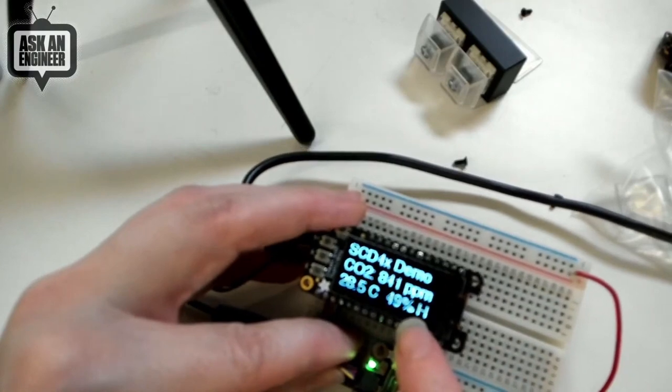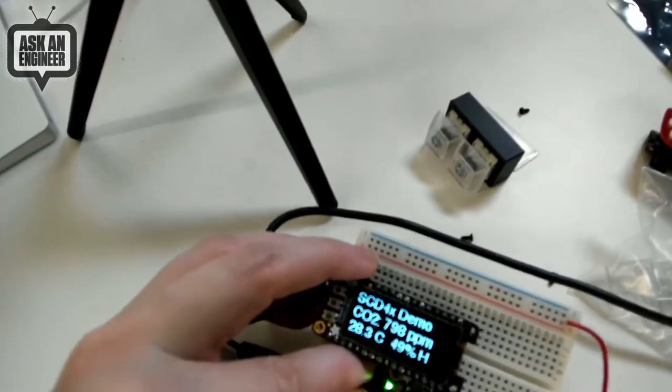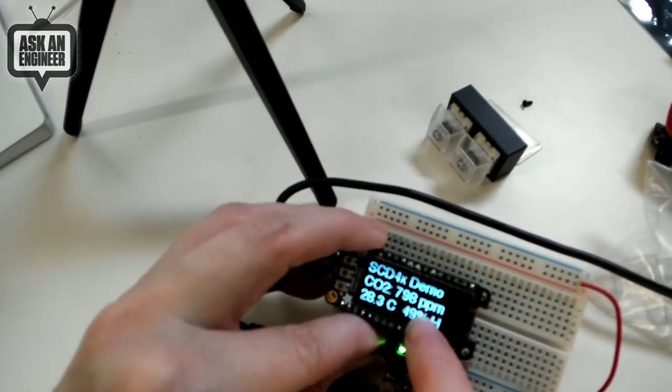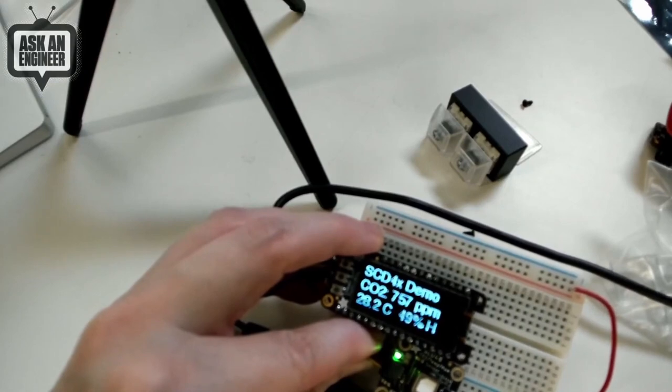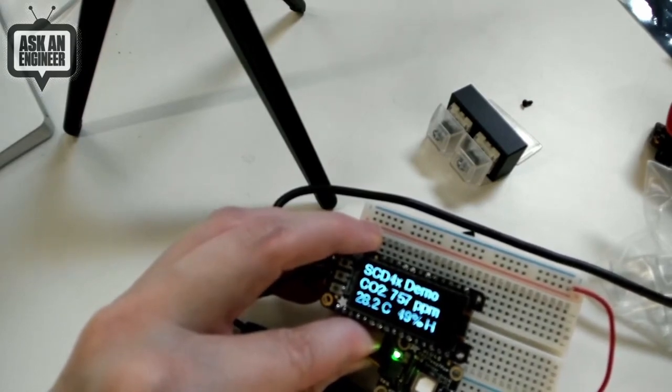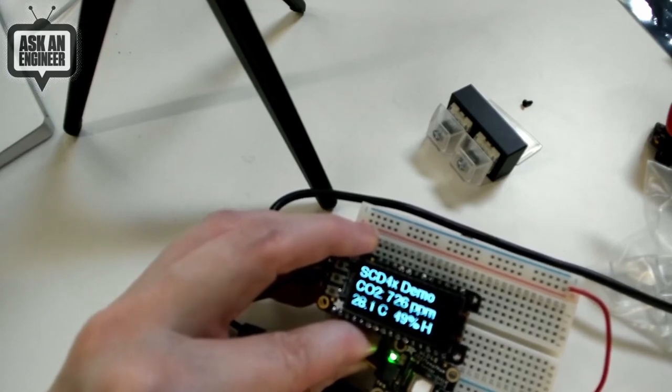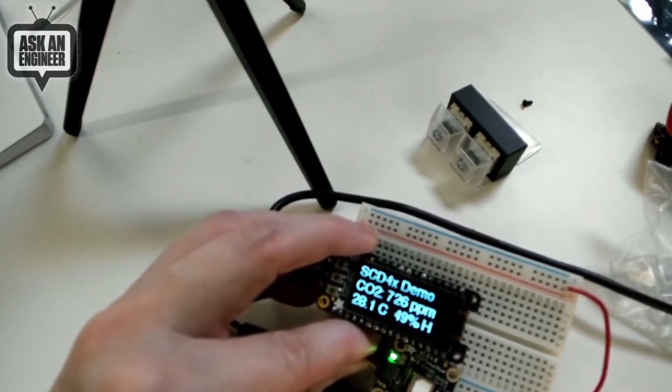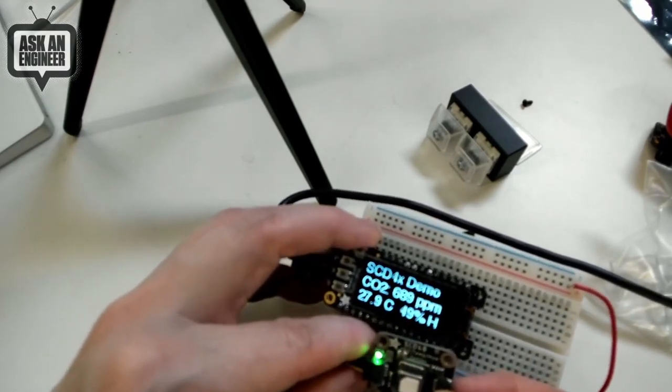And you've got humidity 49%, you've got temperature 28% or so. And then the PPM, I breathed on it so it spiked up pretty high, but this will measure I think once every five seconds. Again from 400 which is outdoors, 400-ish to indoors you're going to get up to like about a thousand, again maybe up to 2000 if it's a little stuffy indoors.